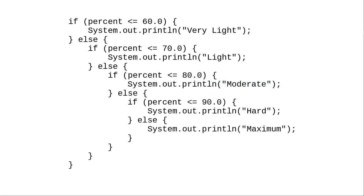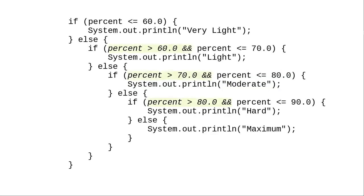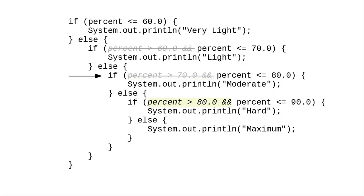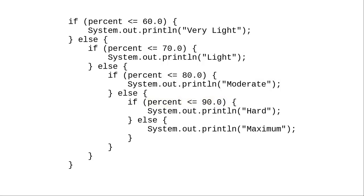You may be wondering why we didn't write this code with compound conditions. Let's follow through again with 73%. Is 73 less than or equal to 60? No. Since it isn't less than or equal to 60, it must be greater than 60 — when we get to the next condition we don't need to ask that question again. Is 73 less than or equal to 70? No. That means when we get to the next condition, we know it must be greater than 70 — we don't have to ask that question either. When you nest if-else sequences into a multi-way if-else, you can avoid testing unnecessary conditions.